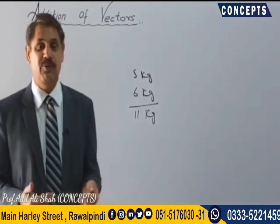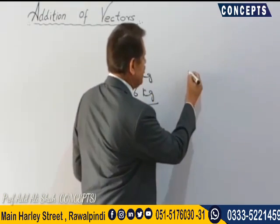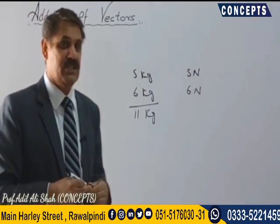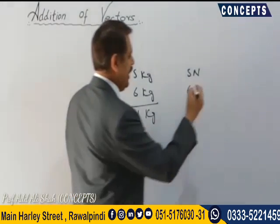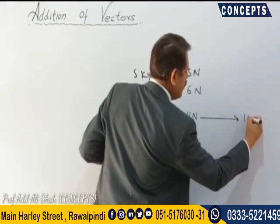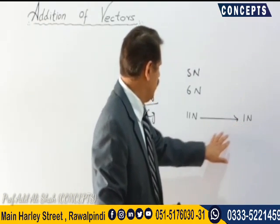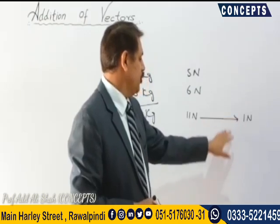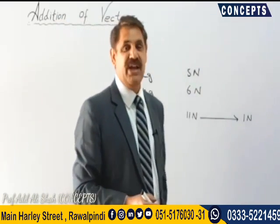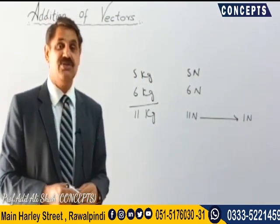With vector quantities, we must take care of their directions. For example, if we have two vectors — 5 Newton and 6 Newton — the answer may be 11 Newton, but it can also be 1 Newton. The answer varies between 1 Newton and 11 Newton depending on a factor, and that factor is the direction of the vectors.